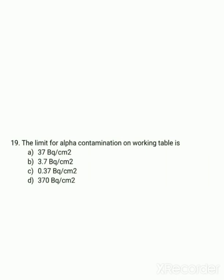The limit for alpha contamination on a working table is 0.37 becquerel per centimeter squared — option C is correct.